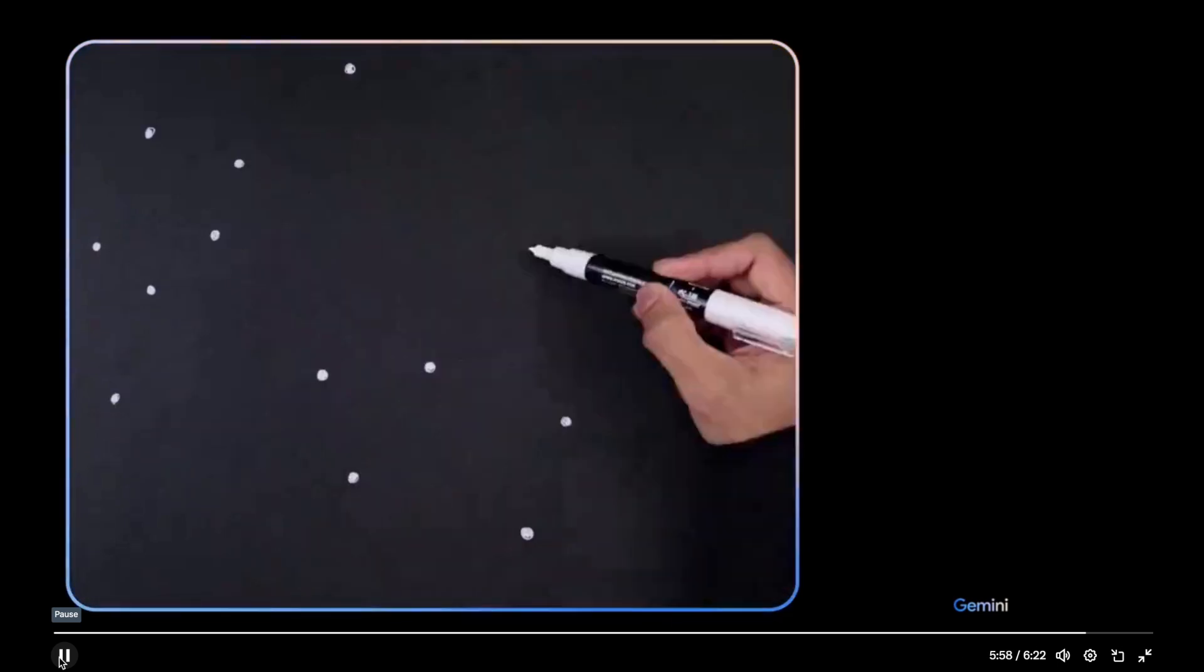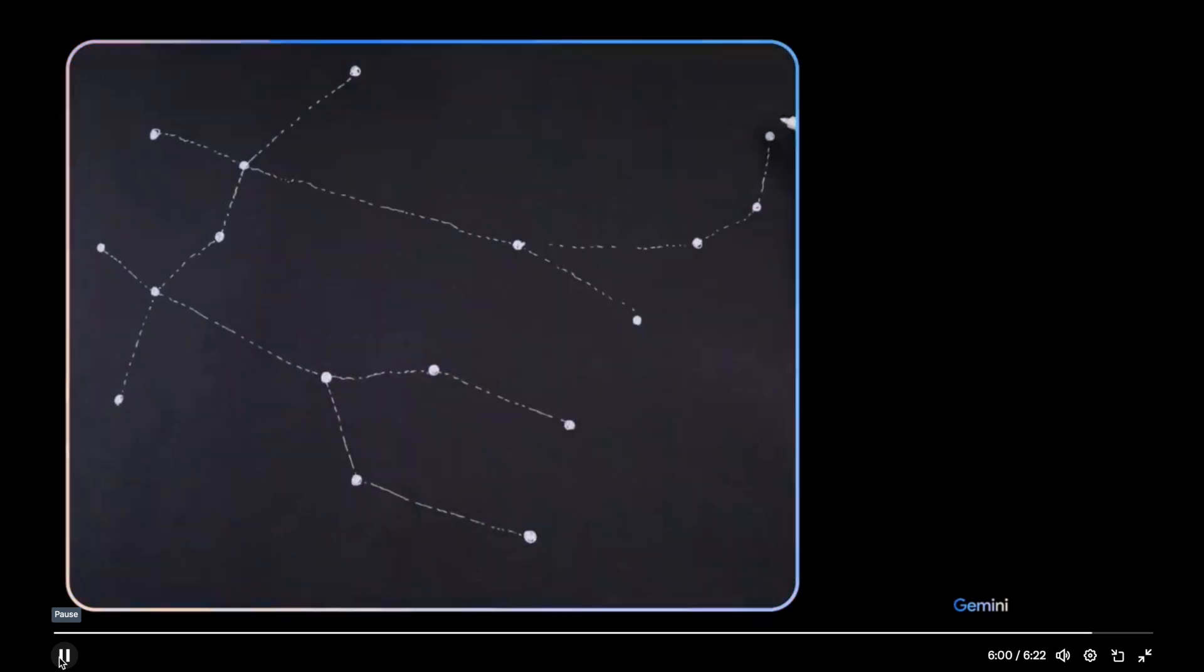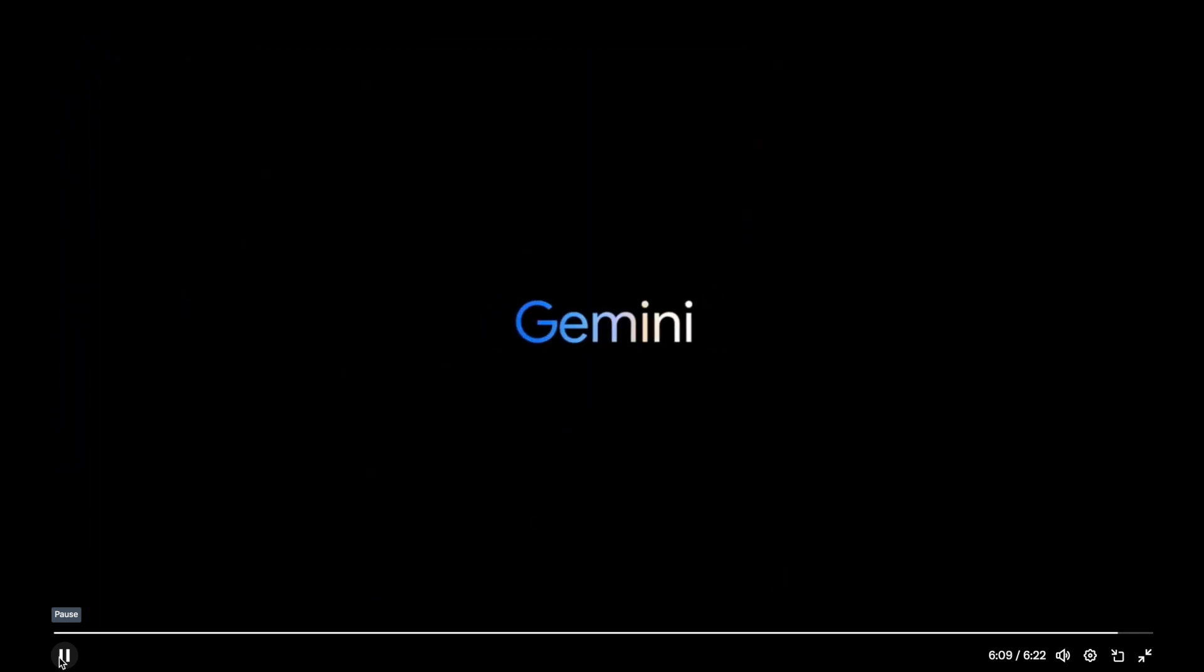Okay. I've got one more for you. Describe the drawing I made. It is a simple line drawing of the constellation Gemini. You did a good job of capturing the beauty of Gemini. Nice. That's it. I think we're done.